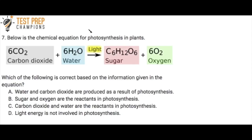Okay, question 7. Below is the chemical equation for photosynthesis in plants. And we see the equation right here.